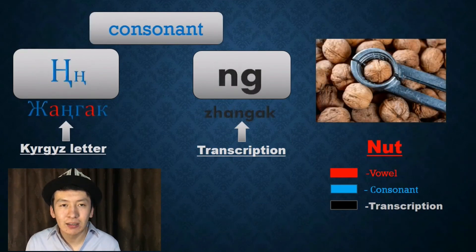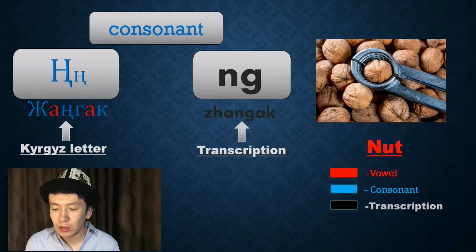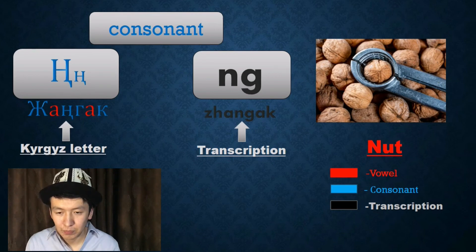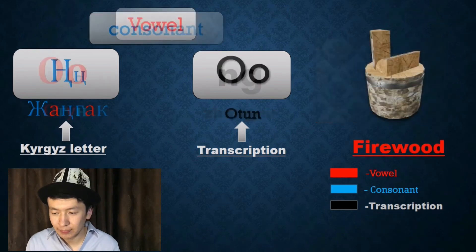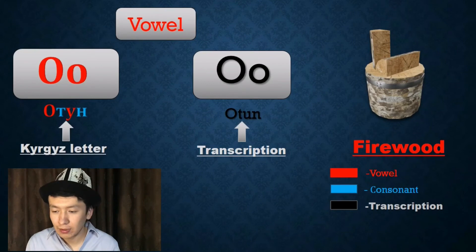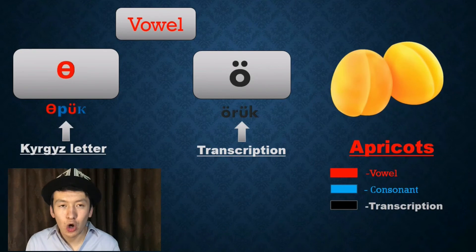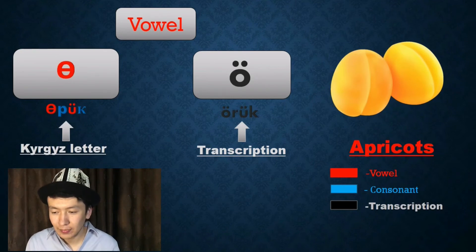Ң — Ңаңqaq. O — Otun, Fire/Food. Ö — Örük, Apricots.